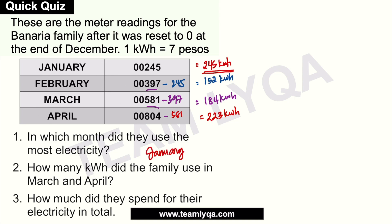Question 2: how many kilowatt hours did the family use in March and April? Since the question only asks for those two months, we add just those two: 184 plus 223 equals 407 kilowatt hours.